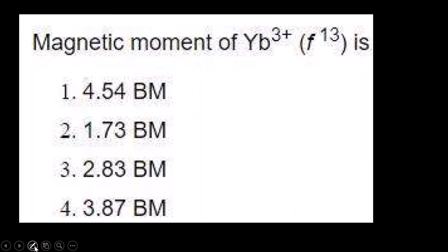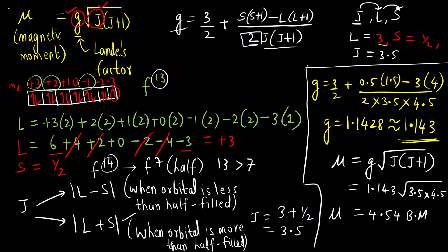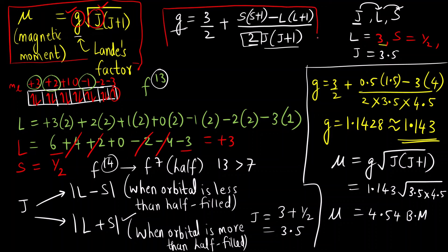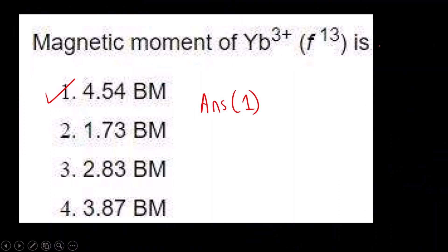The correct answer is option 1. To summarize, there are two very important formulas to remember: the magnetic moment formula μ = g√(J(J+1)), and the Landé g-factor formula. You must also know how to calculate L, S, and J values. I hope you have understood the solution — thank you.